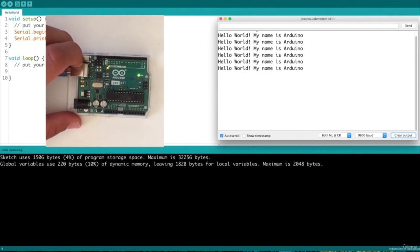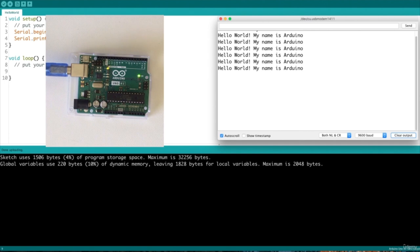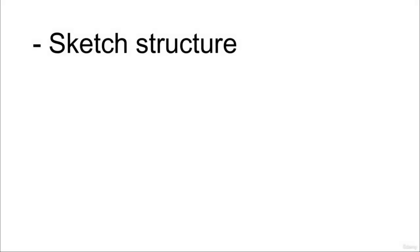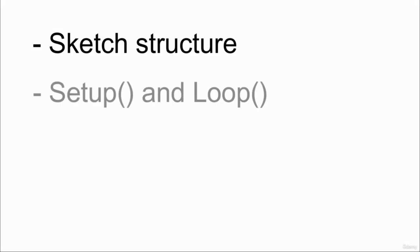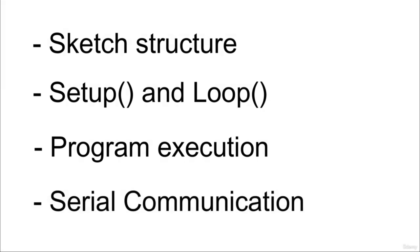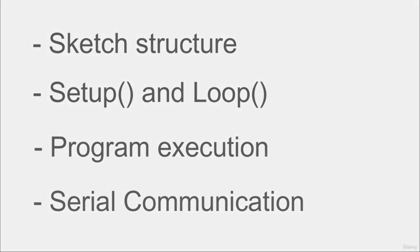We have now finished our first functional program. In this first exercise, we have seen what is the basic structure of an Arduino program, what are the meanings of the setup and loop sections, how the code is executed, and how to use the serial communication to send a message to the computer. In the next lectures, we will dive more deeply into the Arduino programming language, making many other examples.